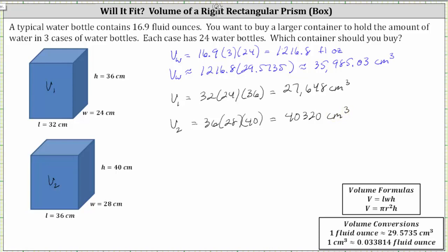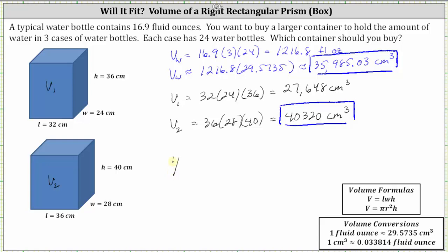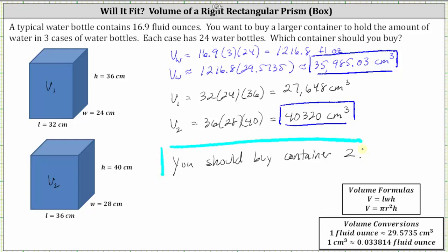Comparing the volumes, notice the volume of the second container is greater than the volume of the water, and therefore this container is large enough to hold the amount of water needed. Which means you should buy container two. I hope you found this helpful.